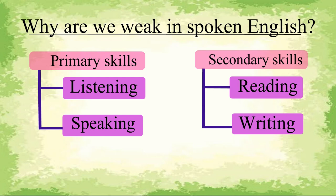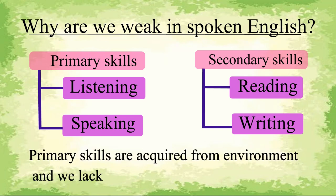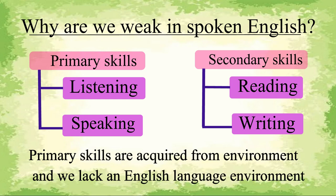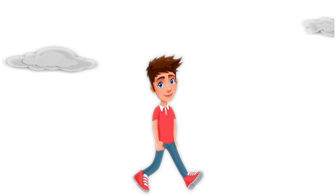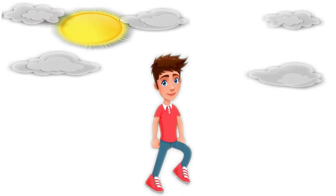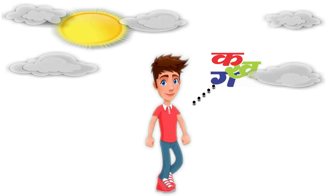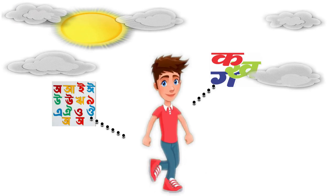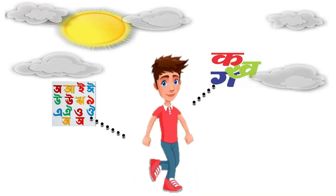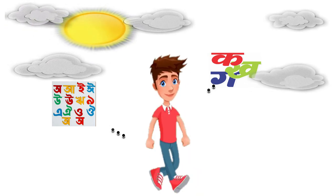We also know that we learn our primary skills of language, like a mother tongue, from our environment. Therefore, to develop our listening and speaking skills in a language, we require practice. This practice can happen by itself if one is living in the environment of that language. For example, a child of a family with Hindi as its mother tongue can speak Bengali well if that child is born and spends its formative years in Calcutta.